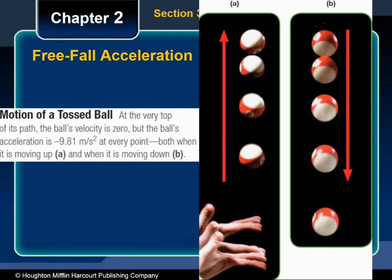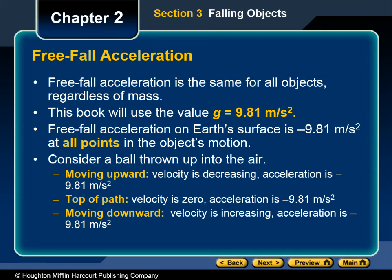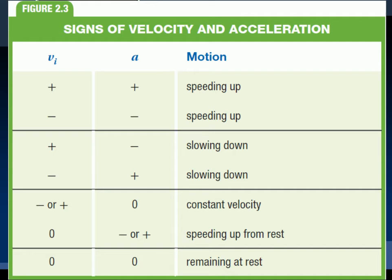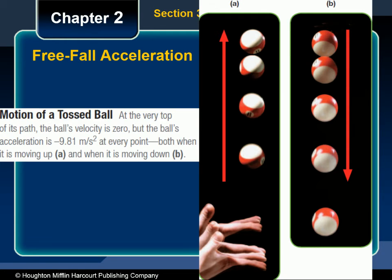At the top of its path, the object's velocity has decreased until it is zero. Although it is impossible to see this because it happens so quickly, the object is actually at rest at the instant it reaches its peak. Even though the velocity is zero at this instant, the acceleration is still negative 9.81 meters per second squared. When the object begins moving down, it has a negative velocity, and its acceleration is still negative. From Figure 2.3, we see that a negative acceleration and a negative velocity indicate that an object is speeding up. This is what happens when objects undergo free fall acceleration. Objects falling toward the Earth move faster and faster, shown by greater and greater displacements between images as the ball falls.